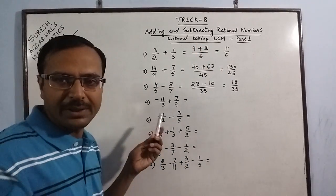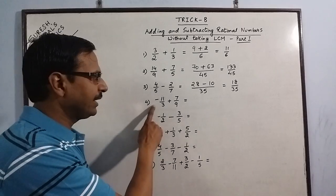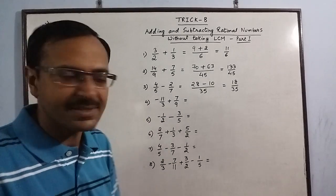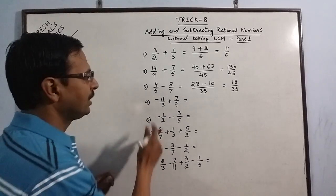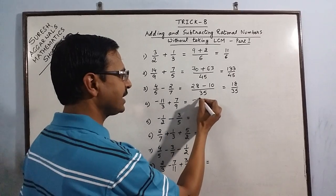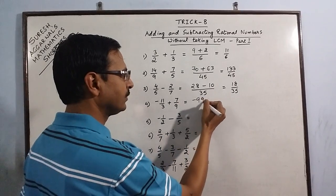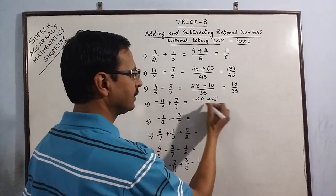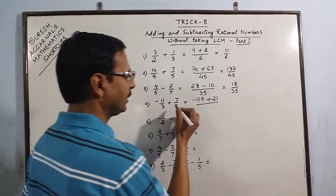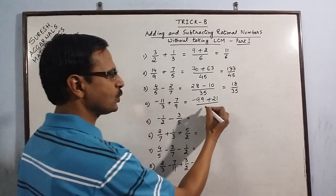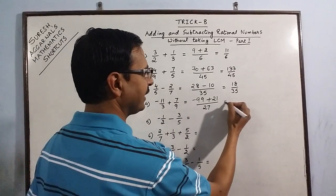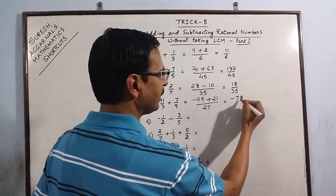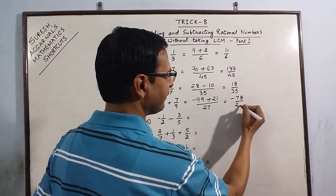Another example involving one negative and one positive sign — the method remains the same. Minus 11 times 9 is minus 99; 7 times 3 is 21; 9 times 3 is 27 in the denominator. So the final result is minus 78/27.